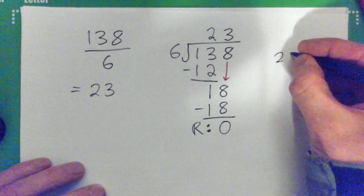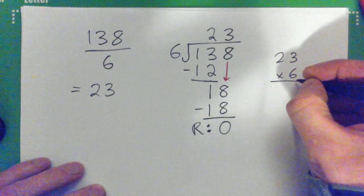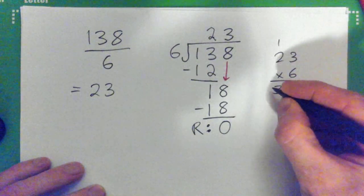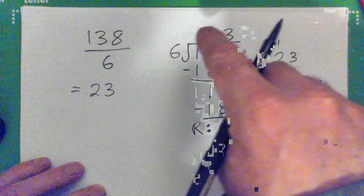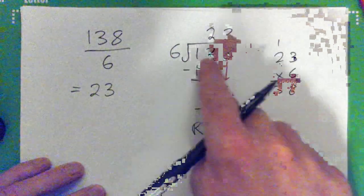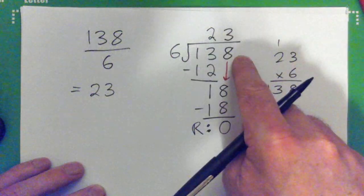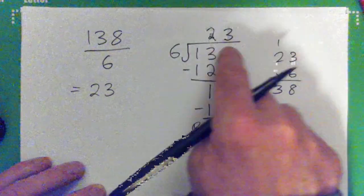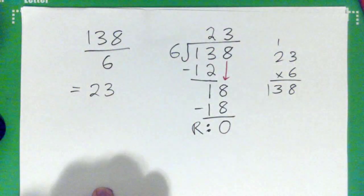If you wanted to check it, you just go 23 times 6. 6, 3 is 18. Carry 1. 6, 2 is 12. And 1 is 13. And that's, you know, this times this gives what's in here, right? If that makes sense. So, these two numbers should multiply to give the big one in there. Yep. Good.